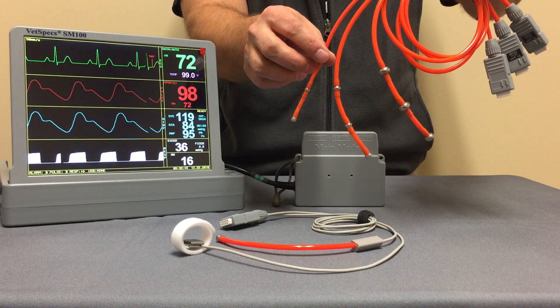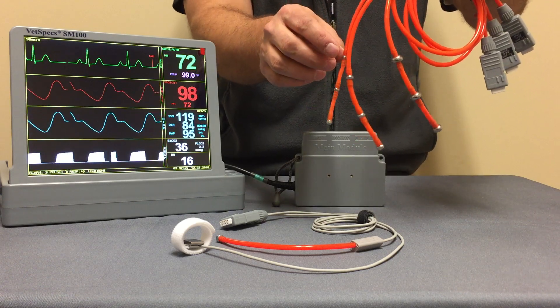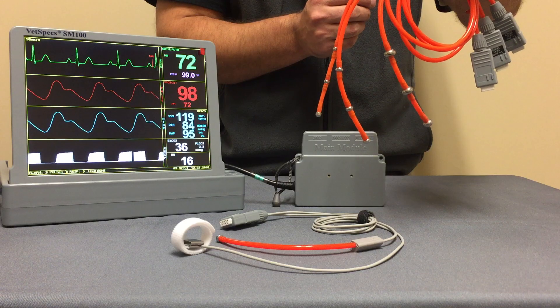You basically just choose the size according to the weight of the patient, insert the probe into the esophagus, and again you're going to get that information.